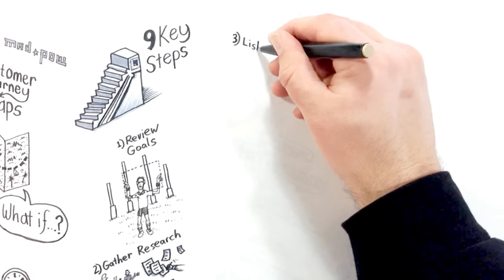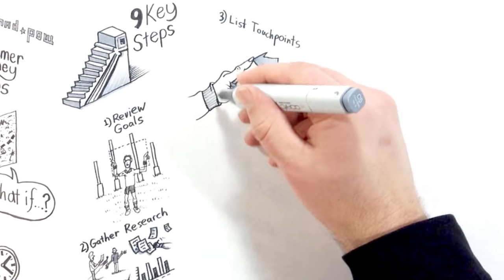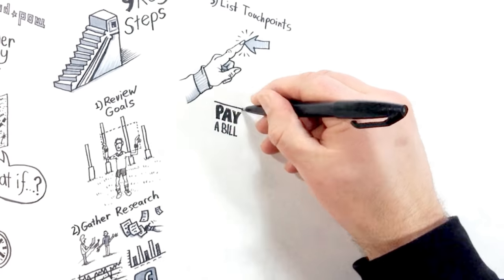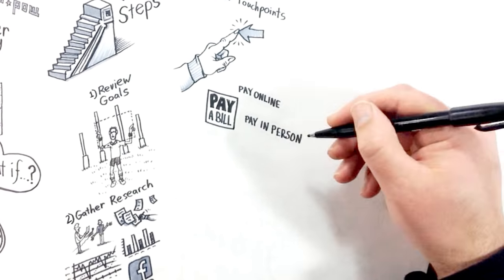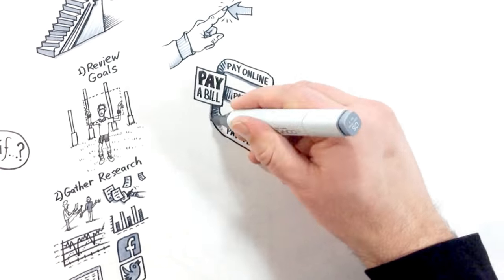Number three, generate a list of customer touchpoints and the channels on which those touchpoints occur. For example, the touchpoint could be pay a bill, and the channels associated with that touchpoint could be pay online, pay in person, or pay via mail.